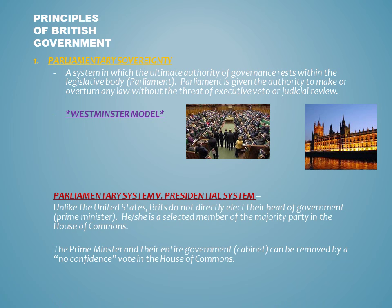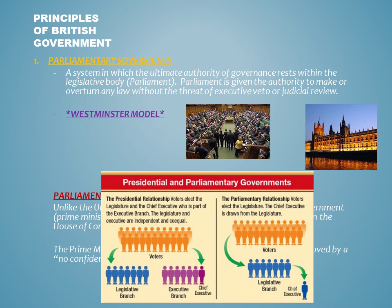Parliamentary systems of government differ from those of the United States' presidential system. Unlike the United States, the British people do not get to directly elect their head of government. Instead, that person is selected from within the majority party of the House of Commons following a UK general election. The Prime Minister and their entire government, also known as their cabinet, can be removed by a vote of no confidence from within the legislature.